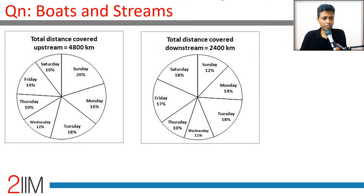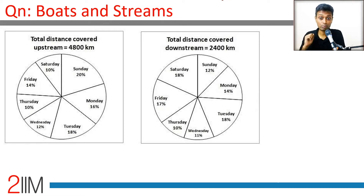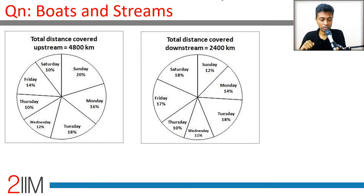Total distance covered upstream is 4800 km. Sunday is 20 percent of that, Saturday is 10 percent, Monday is 16 percent, with other assorted percentages. Total distance covered downstream is 2400 kilometers. Overall the boat has traveled more upstream than downstream.